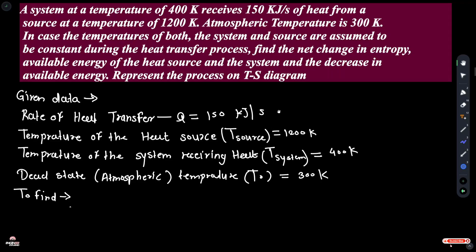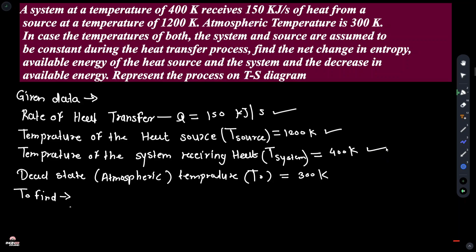The rate of heat transfer Q is equal to 150 kJ per second. Temperature of heat source T_source is equal to 1200 K. Temperature of the system receiving heat T_system is equal to 400 K, and atmospheric temperature T0 is equal to 300 K.